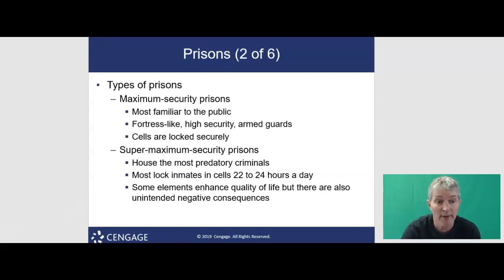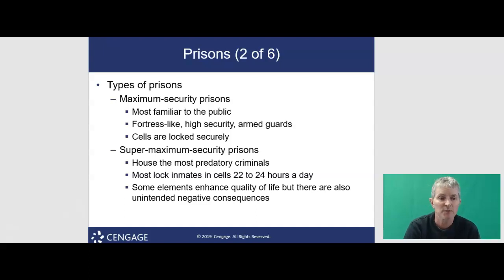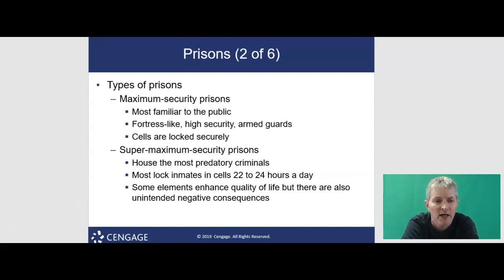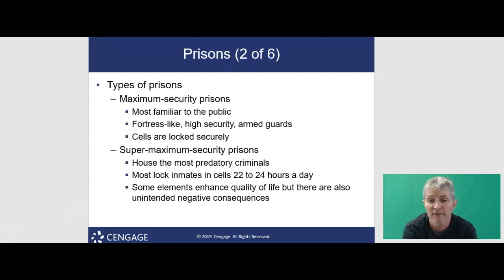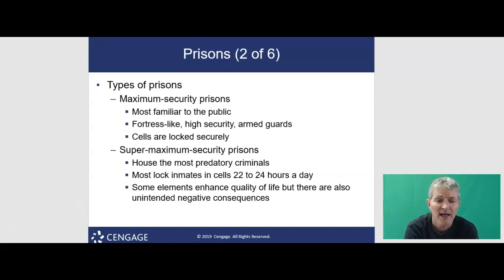There's also supermax security prison, the newest form of maximum security. It uses high levels of security to incapacitate the nation's most dangerous criminals. Most inmates are in lockdown 22 to 24 hours per day. Critics believe these prisons infringe on inmate rights. Some researchers found elements that enhance quality of life, including increased privacy, reduced danger, and creature comforts. However, unintended negative consequences include staff having too much control, long hours of isolation associated with mental illness, and inmates having a difficult time adjusting upon release.